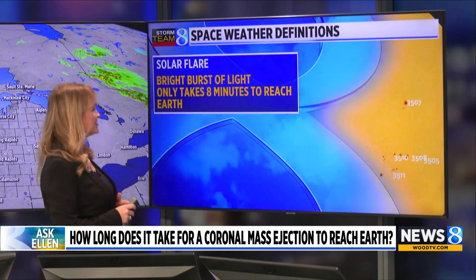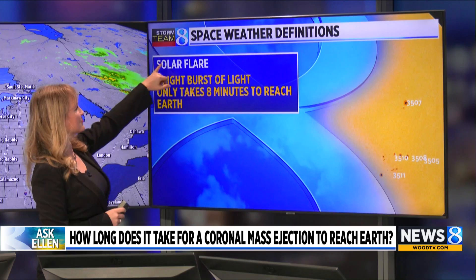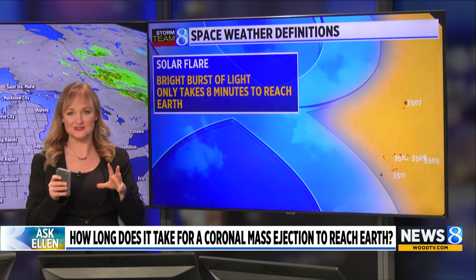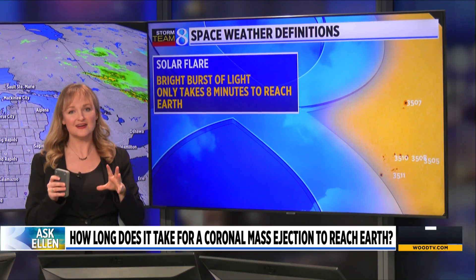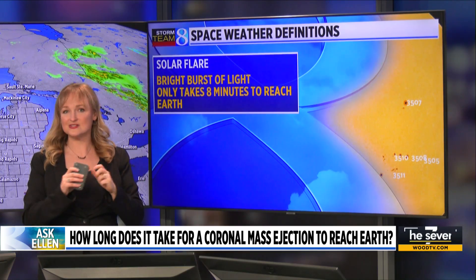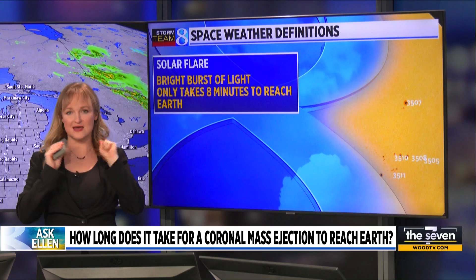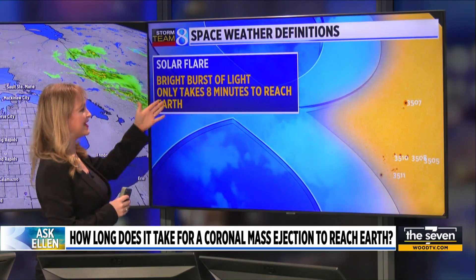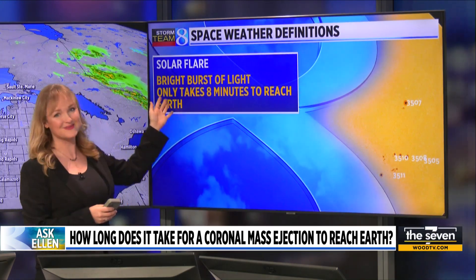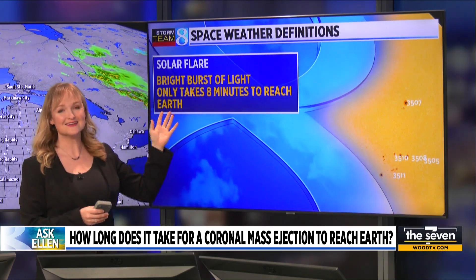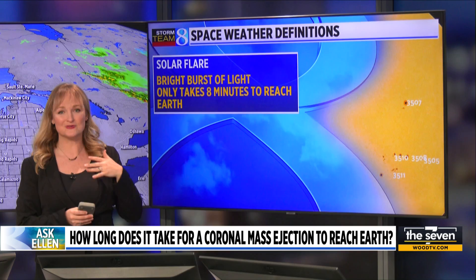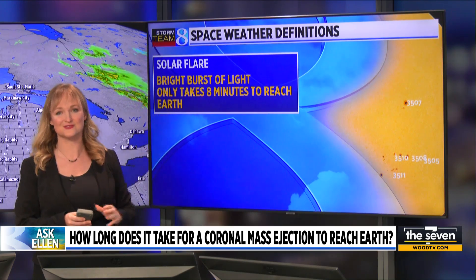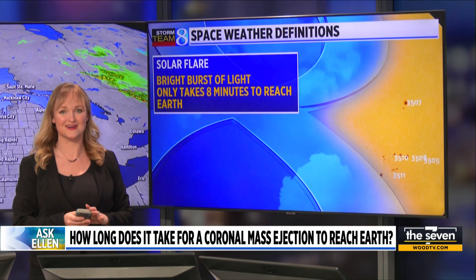A solar flare is a burst of light and x-ray energy, defined as that burst of light. It reaches Earth in about eight minutes, so not long. Scientists will see solar flares by noticing a bright flash on the surface of the sun.